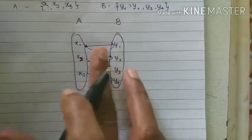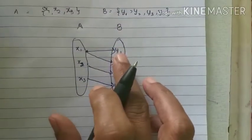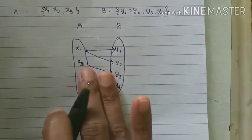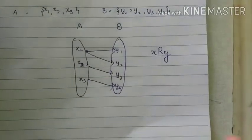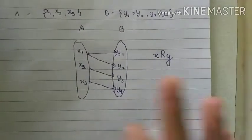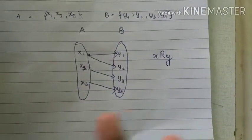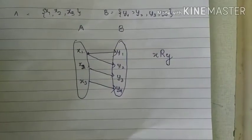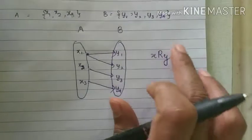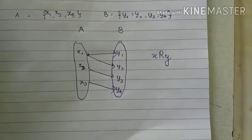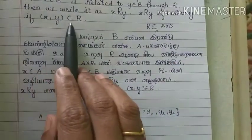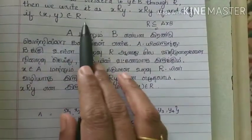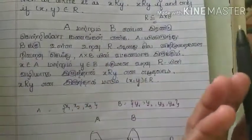If we have two sets, we can represent X R Y. So this is the relation. Relation is nothing but a connection between two sets. If we have two sets, we can represent X R Y. The definition is more straightforward: X is related to Y if and only if (X, Y) belongs to R. So X, Y belongs to the relation — that is the same thing, vice versa.